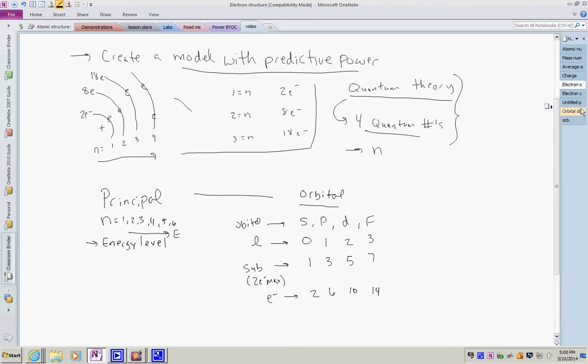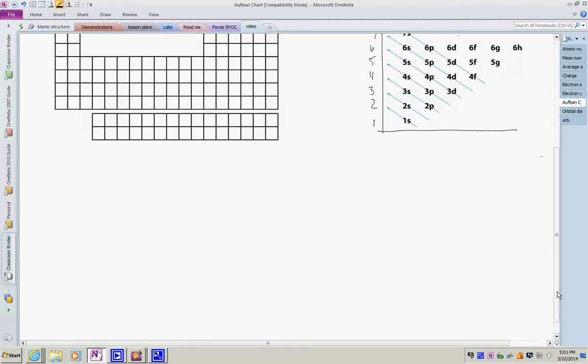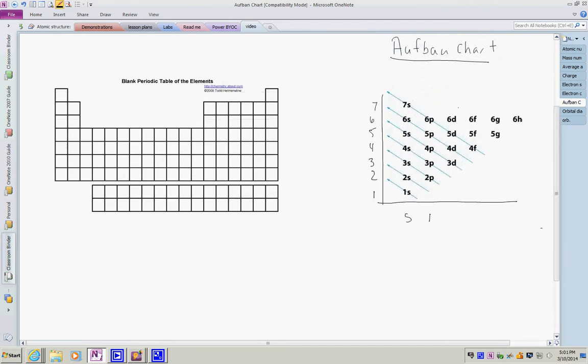This chart here is called the aufbau chart, and in class we will spend some time creating this and looking at it. I'm going to draw an x axis here, a y axis here. On the y axis I will put down the energy levels one through seven, and then on the x axis I will include the orbitals. Every time we increase an energy level, we gain one more orbital.